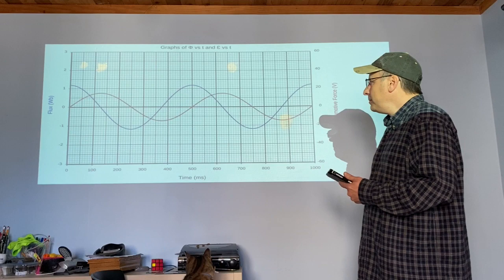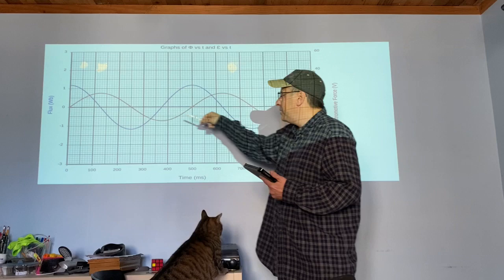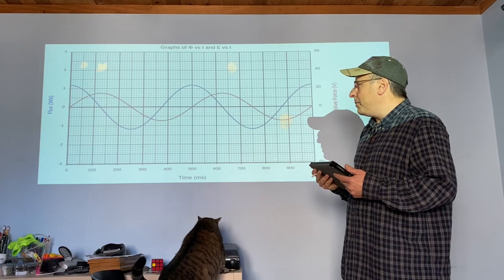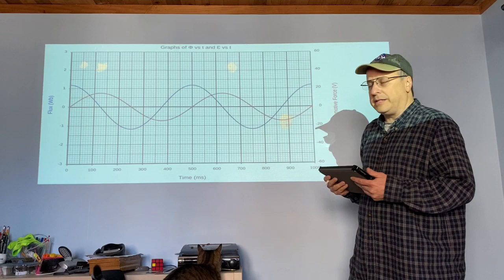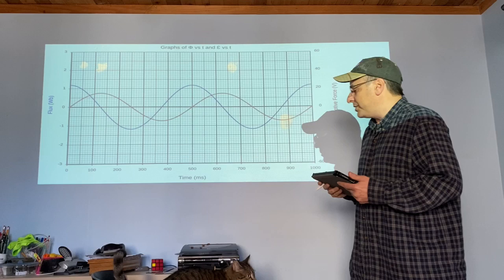Yesterday we saw the relationship between the amount of flux and the voltage that we generate. You can see they are both sine-type patterns, but one is actually a cosine curve — a sine curve that has been shifted — and the other is a traditional sine curve.